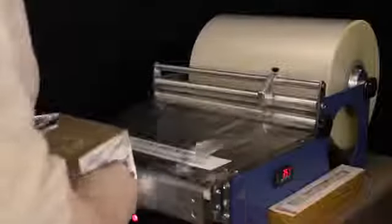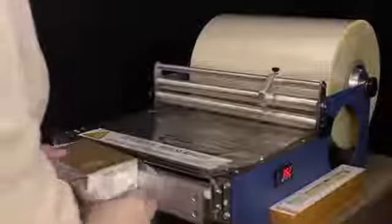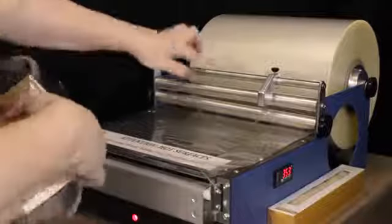Then we're just going to wrap the film around the box and we're going to slide forward. We're going to seal that. That removes it from the roll.